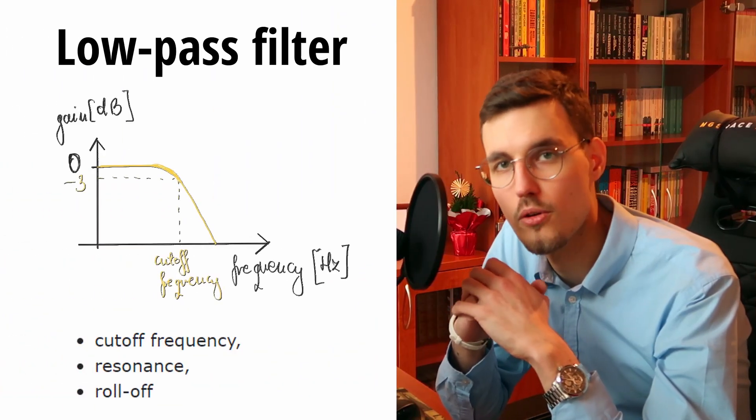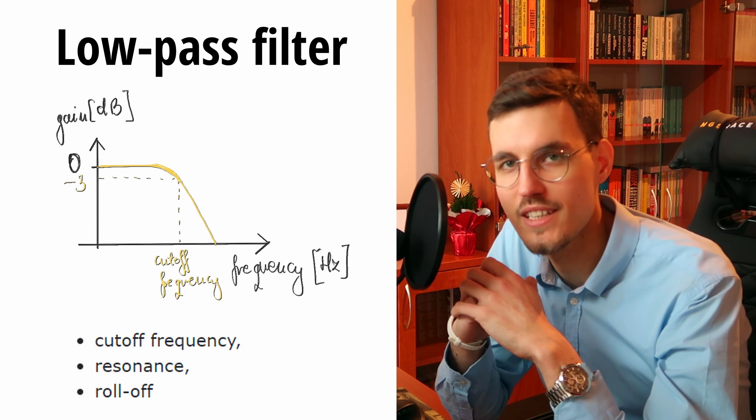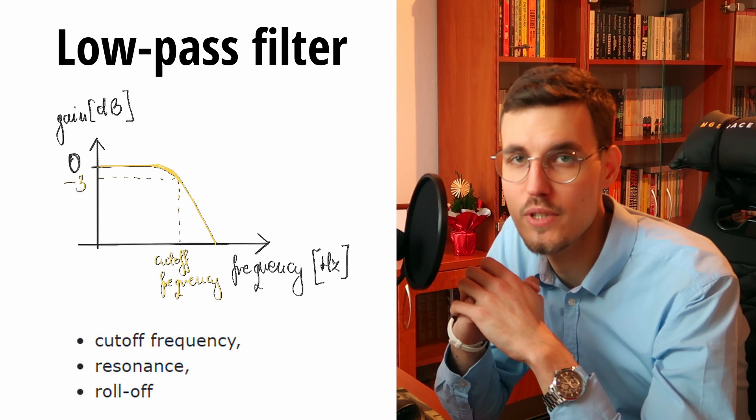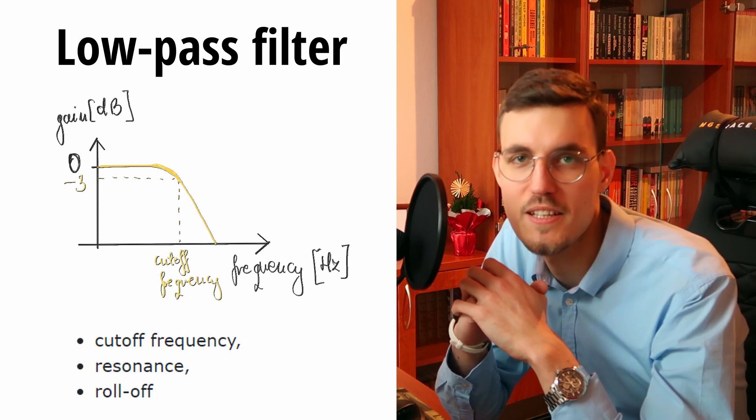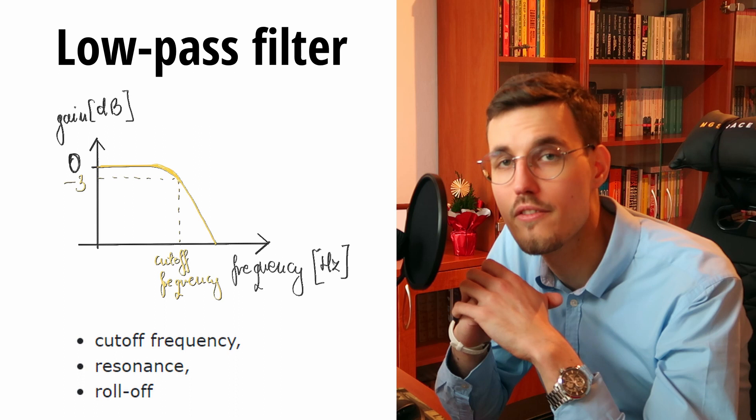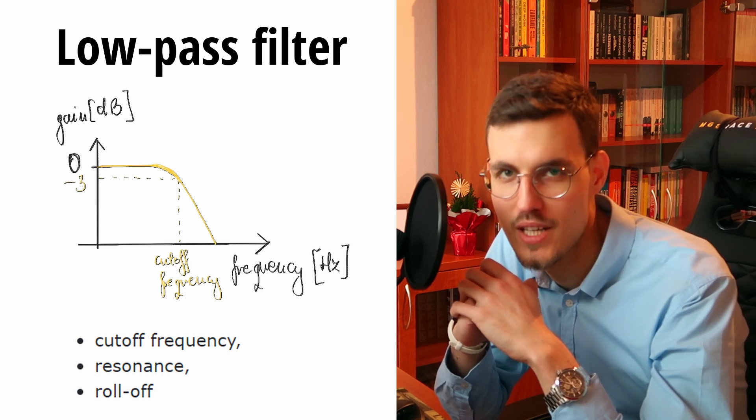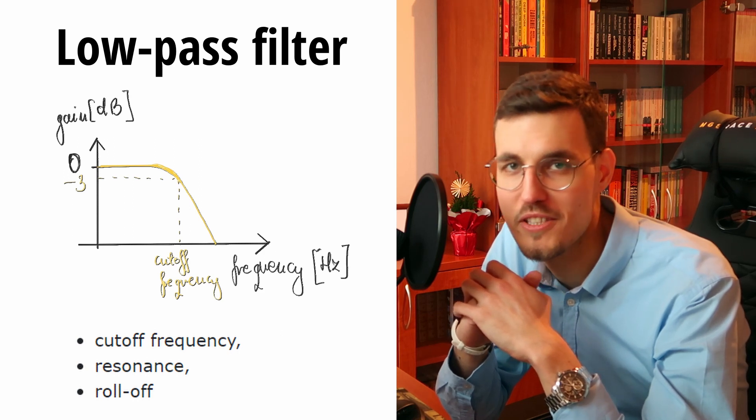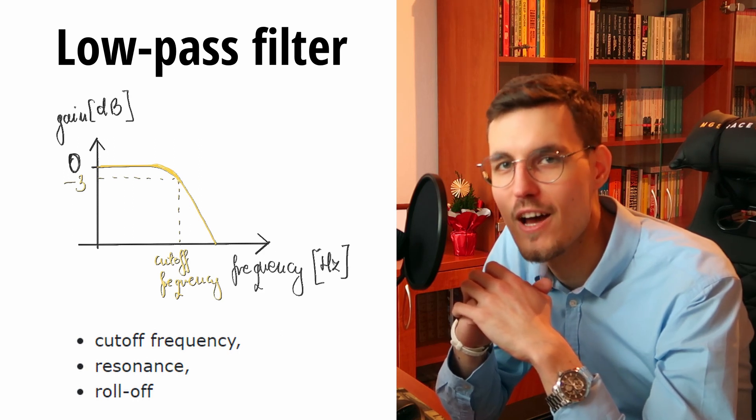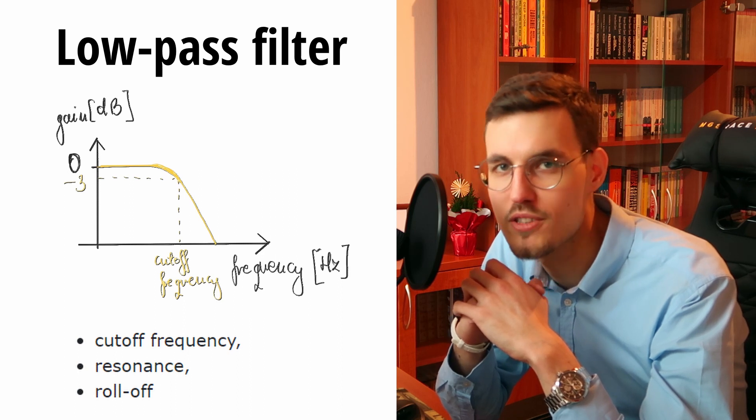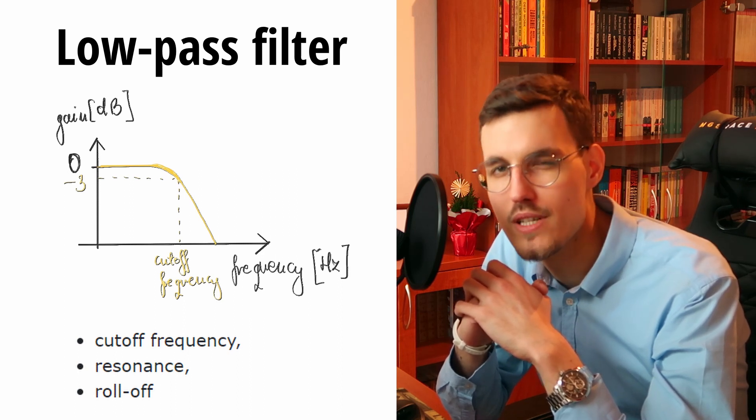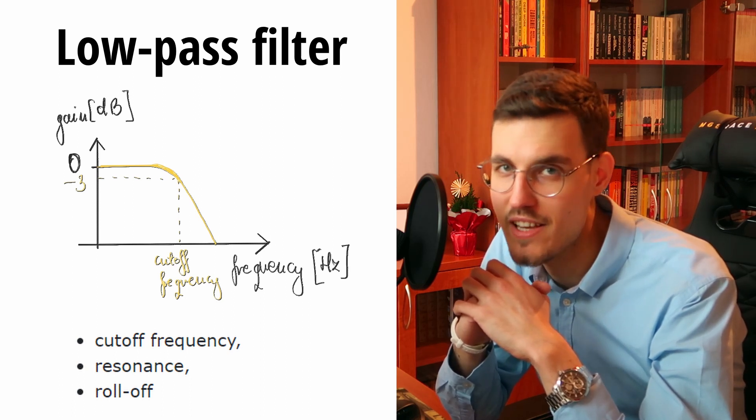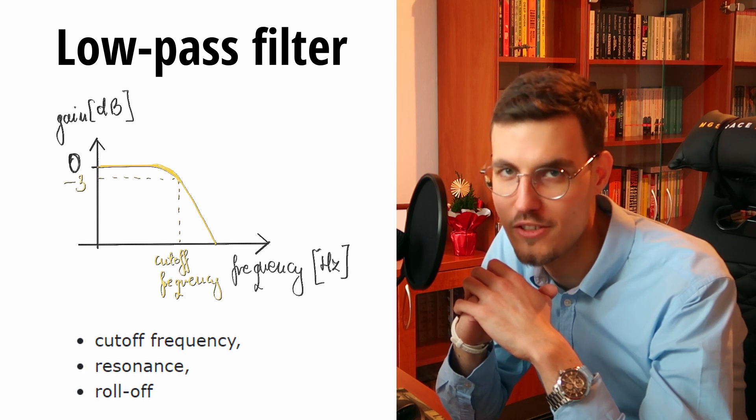The low-pass filter attenuates all frequencies above the cutoff frequency. The cutoff frequency specifies the frequency at which filter attenuation is exactly minus 3 decibels relative to the unfiltered signal. Another parameter is resonance. Resonance lets you create a peak around the cutoff frequency in the amplitude response of the filter. The resonance parameter was probably the main factor behind the success of the Moog synthesizer filter section.